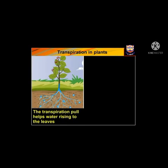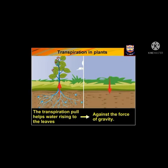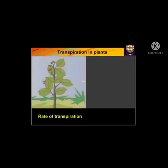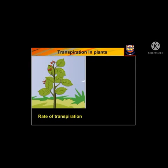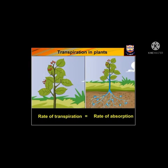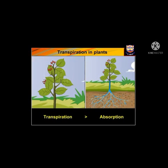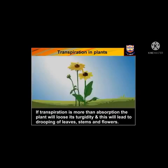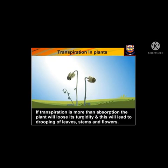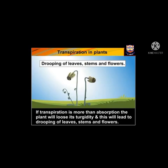Transpiration is very important to plants. The transpiration pull helps water rise to the leaves against the force of gravity. The rate of transpiration in plants is always equal to the rate of absorption. If transpiration is more than absorption, the plant will lose its turgidity, and this will lead to drooping of leaves, stems, and flowers.